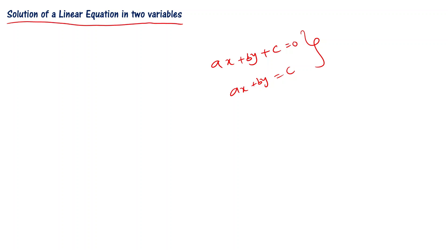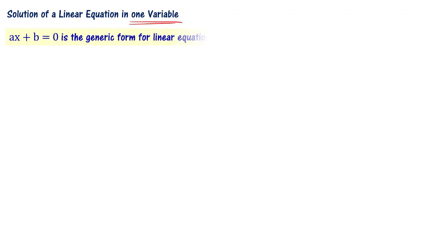Before we start, let us quickly recall the solution of a linear equation in one variable. In one variable, ax plus b equal to 0 is the generic form for a linear equation in one variable. Here, a and b are constants.